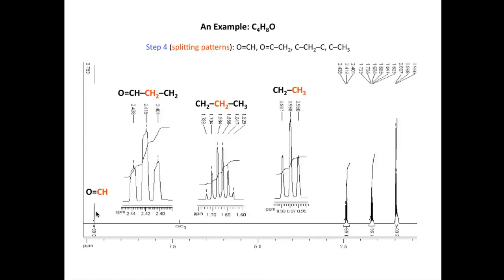Finally, the signal for the aldehyde is essentially a singlet. So when we put all that information together, we can determine that the unknown compound is actually butanal, which is shown here. The CH3 at the end is hydrogens in green, associated with this signal at 0.97 ppm.